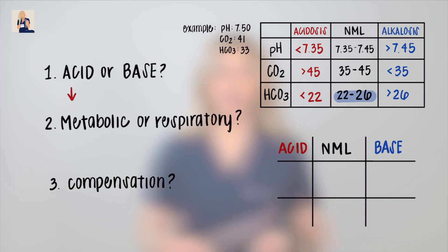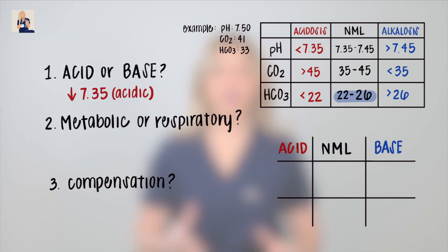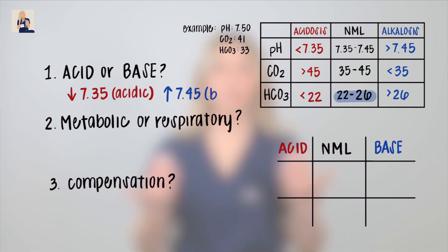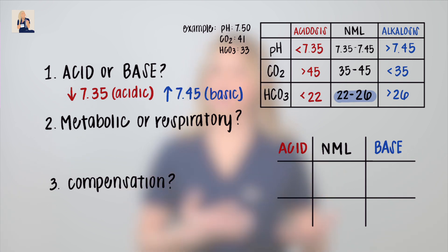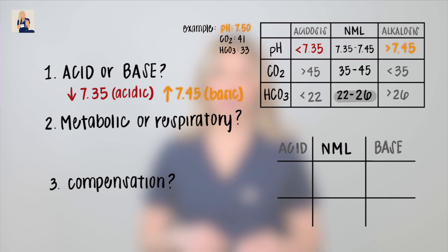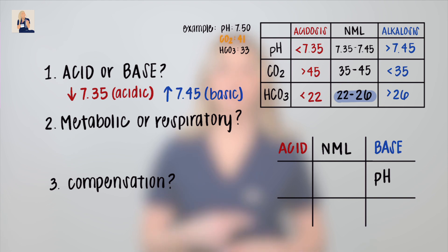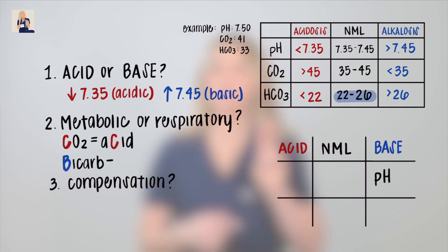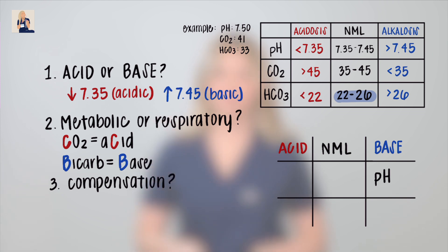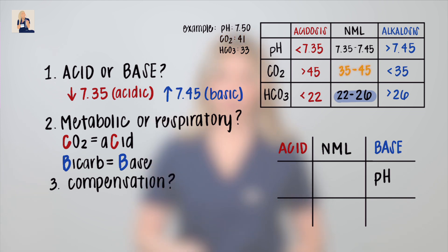Starting with pH, the lower we go the more acidic we get; the higher we go, the more basic we get. We can see that the pH is greater than 7.45, so we're going to put the pH under the base column. Next, we move on to CO2 and bicarb. Remember, CO2 is an acid and bicarb is a base. CO2 is 41, which is in the normal range, so we'll put that under the normal column.